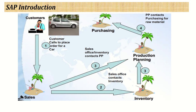Once the sales department receives a call from the customer for one order of a car and enters the order in the system, with the help of the ERP system they can check in the software whether inventory is available for the product or not — from any location they can check the stock availability. In case there is no stock, they can cross-check whether that product is currently on the production floor or if production is going on for that particular product.